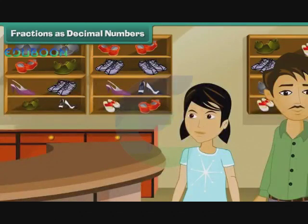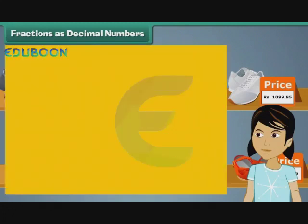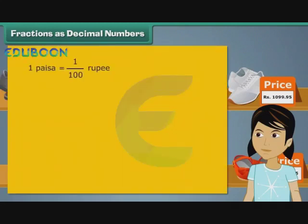Arpita went with her father to buy her school shoes. Prices of footwear in the store were expressed as decimal numbers. She wondered what the decimals in the prices meant. 100 paise make 1 rupee. In other words, 1 paise is 1 by 100th of a rupee. It can also be written as 0.01 rupee.